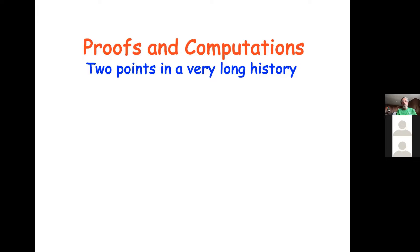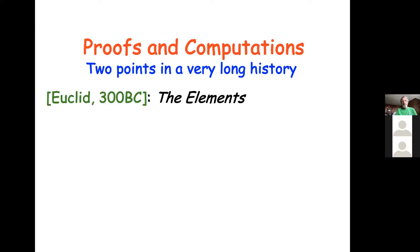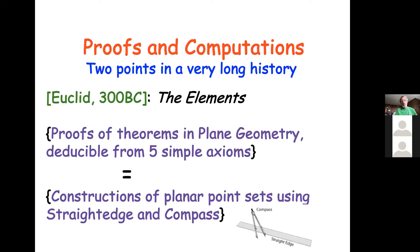I want to start with proofs and computation — it's a long story and I'll give you just two points. First, long ago, Euclid in his book The Elements describes plane geometry, which you can view in two ways: as a proof system in which you can prove all theorems of plane geometry deducible from five axioms, and also as computations, since all the proofs are constructive and use just a straight edge and compass. In this setting, proofs and computation are equivalent.